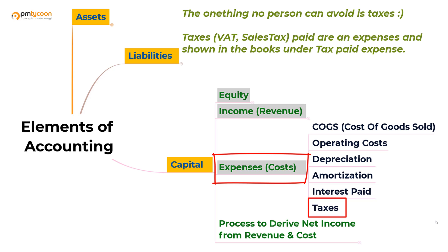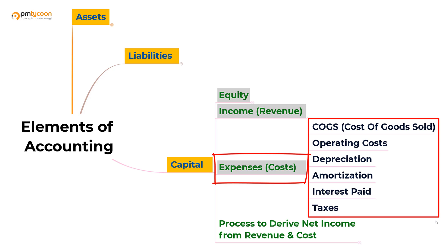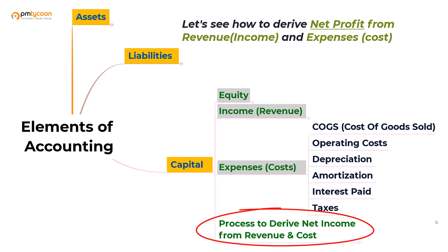Taxes are something no one can avoid. A firm pays taxes such as VAT (Value Added Tax), sales tax, and tax on income as well. Once profits are made, these are all considered as expenses. Now that we have understood the different types of expenses, I'm going to explain how to derive the net profit from the incomes and expenses — or let us call it revenues and costs.